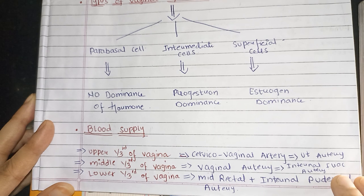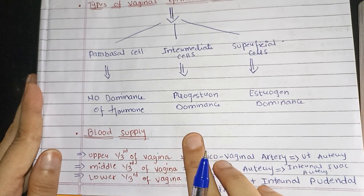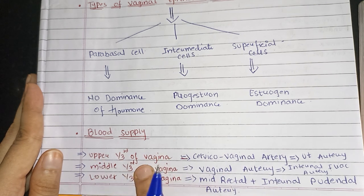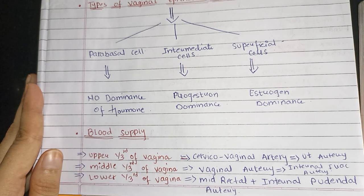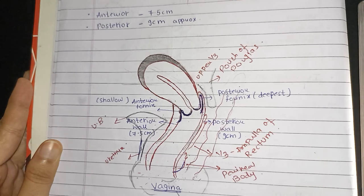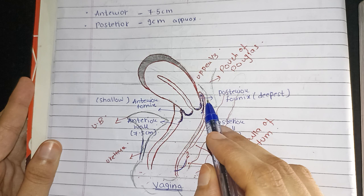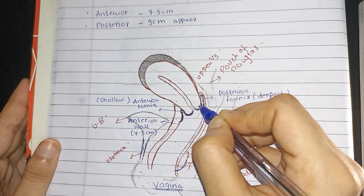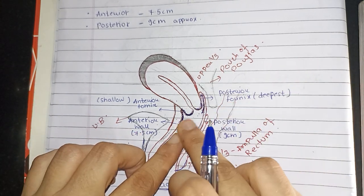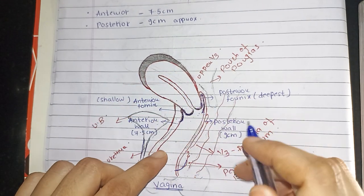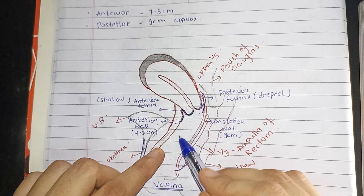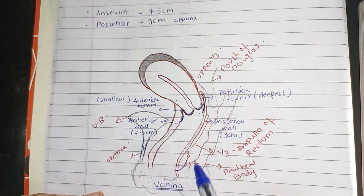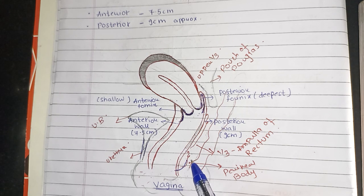Now coming to the blood supply of vagina. The upper one-third part of vagina — as the cervix is protruding into the vagina — will be supplied by the cervicovaginal artery. The cervicovaginal artery is a branch of the uterine artery. The middle one-third part will be supplied by the vaginal artery, as the middle one-third part is vagina itself. The lower one-third part will be supplied by the pudendal nerve as well as the middle rectal artery, as the lower one-third is in relation with the perineal body and posteriorly with the rectum.